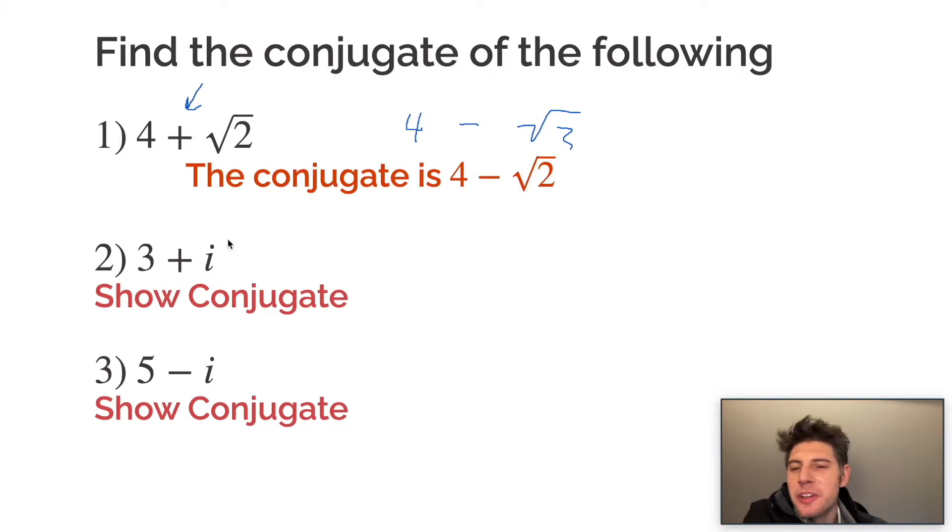So for number two, this one doesn't have a square root, but it has an i, and i is an imaginary number. It stands for the square root of negative one.